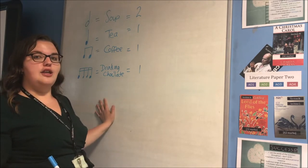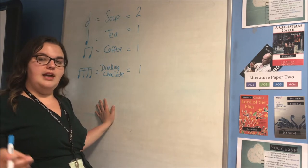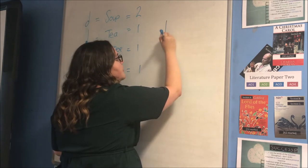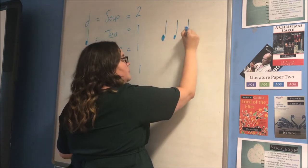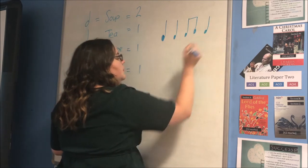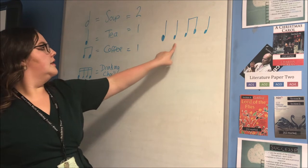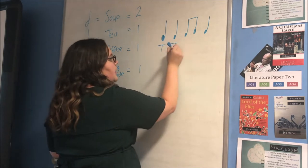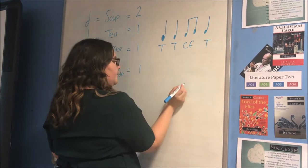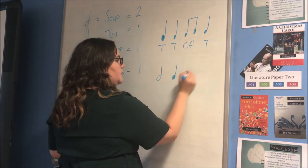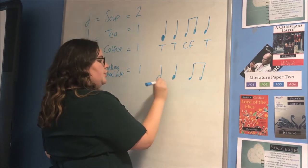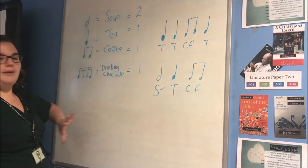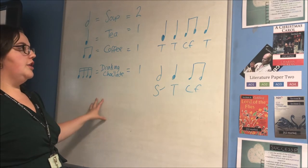Your first task: you need to go onto cue and you need to identify the rhythms. So if I have got this, you would go tea, tea, coffee, tea, because that's what's here. If I have this, I've got soup, tea, coffee. It's just using the notation diagram. Feel free to write the diagram down as well when you do it.